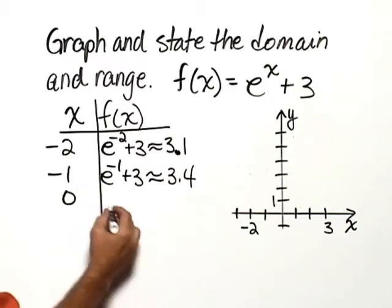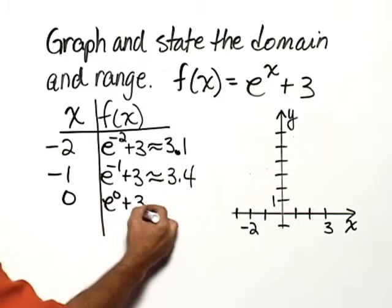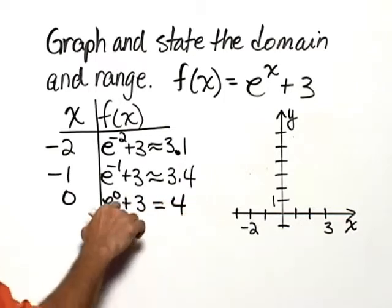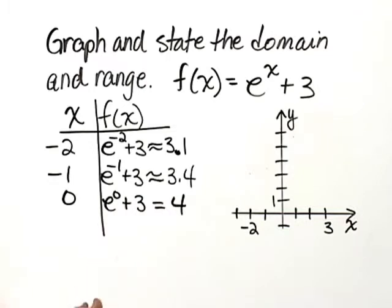For x equals 0, e to the 0 plus 3 is exactly equal to 4 because e to the 0 is 1. 1 plus 3 is 4.